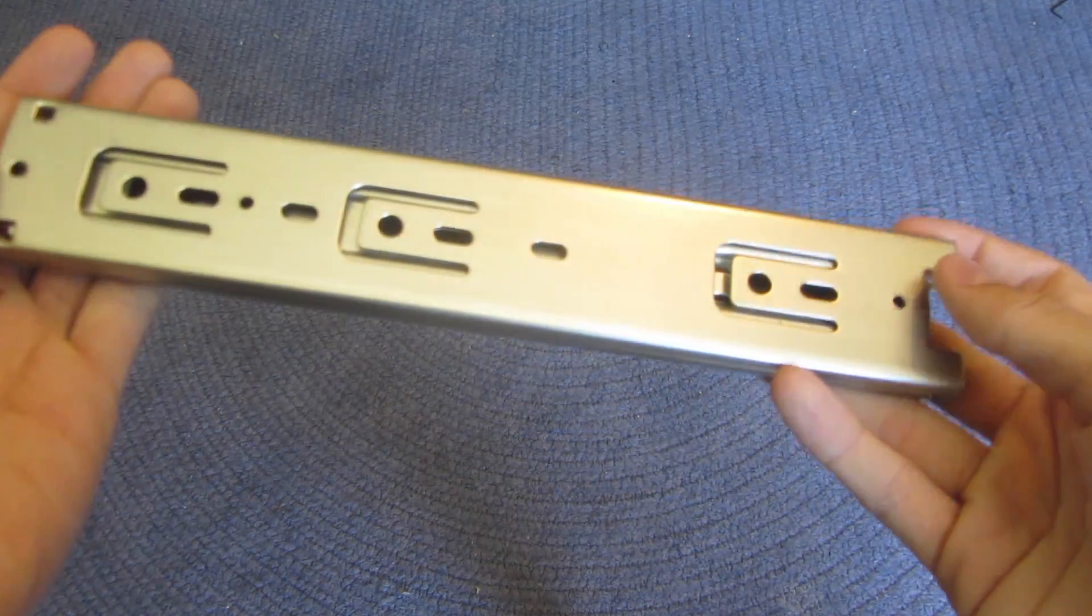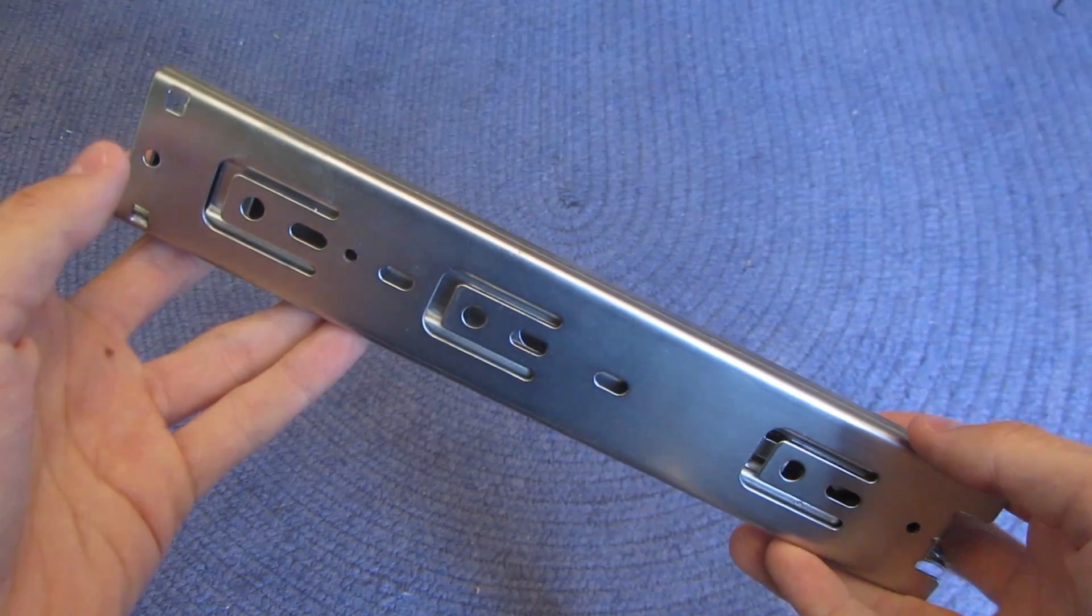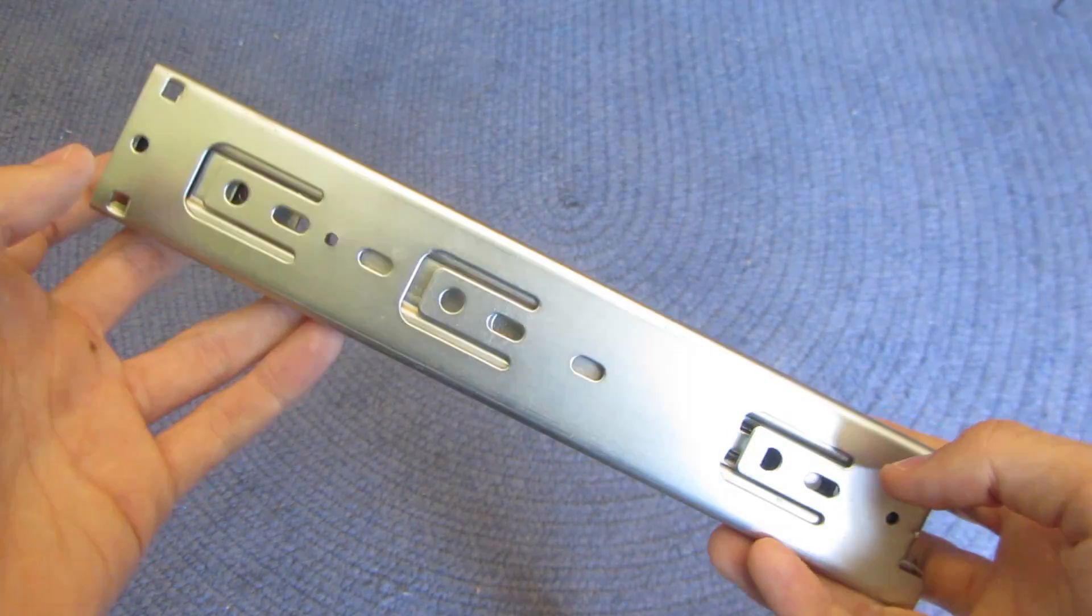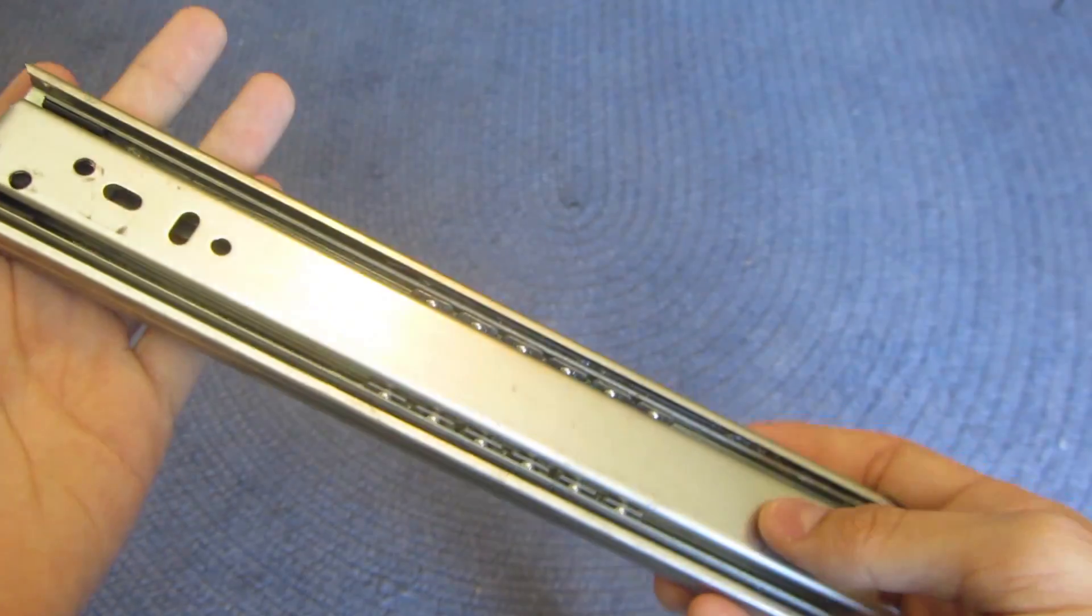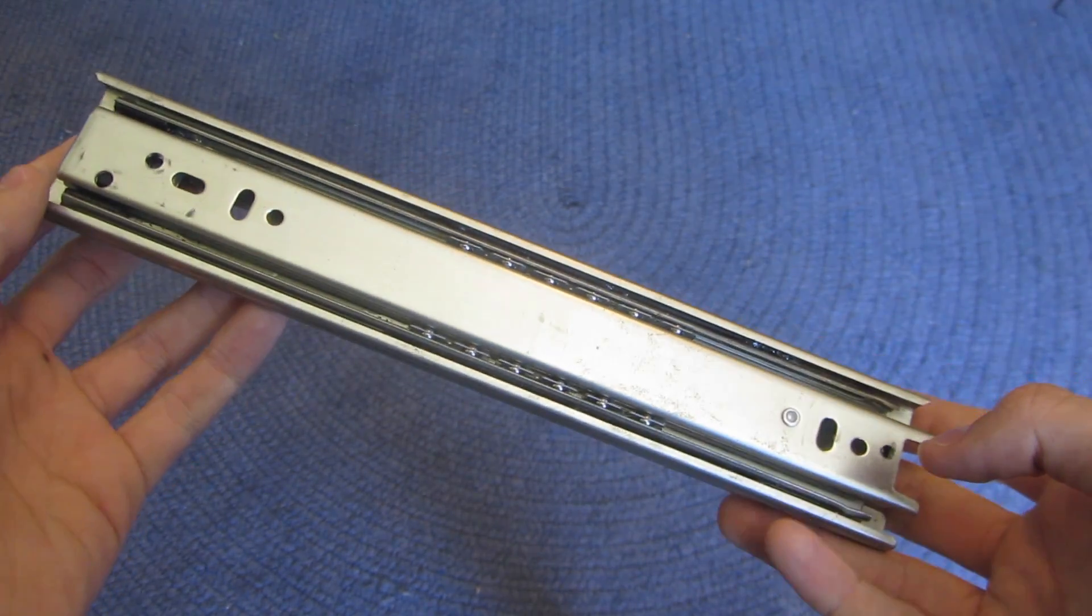This is one of the drawer slides that we used on our robot from early in the season when we went to the Saratoga qualifier. It's galvanized steel from Home Depot and it's 10 inches long.